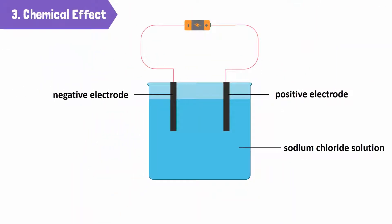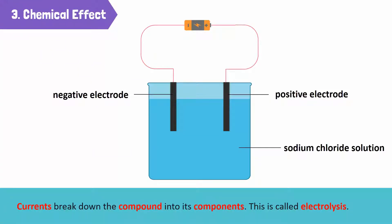This is an example of the chemical effect that results from the flow of current. Currents break down the compound into its components. This is called electrolysis.